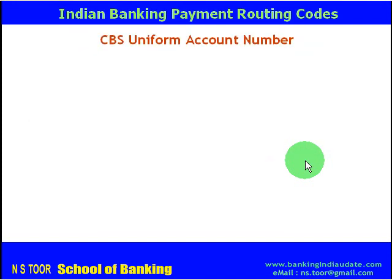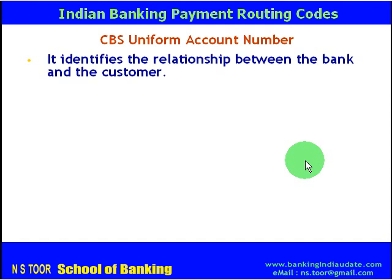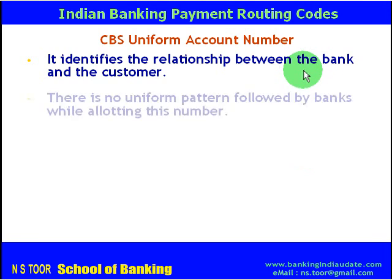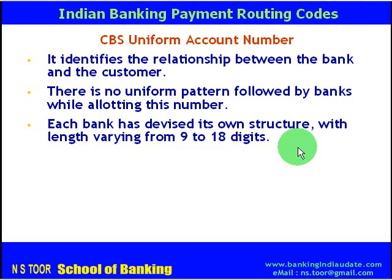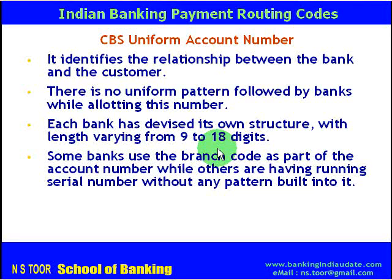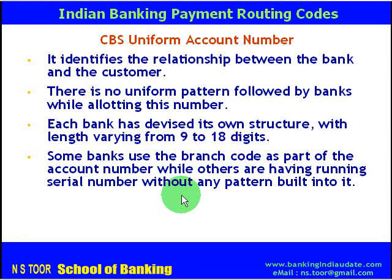Now, the CBS Uniform Account Number. The CBS Uniform Account Number identifies the relationship between the bank and the customer. There is no uniform pattern which Indian banks follow for allotting this number. Each bank has devised its own structure and the length of the account number ranges from 9 to 18 digits. Some banks use branch code as part of the account number, whereas other banks use a running serial number without any built-in pattern. Different banks follow their own discretion and procedure for allotting CBS account numbers.